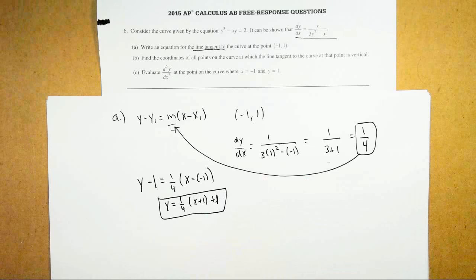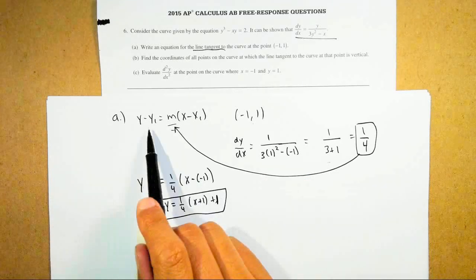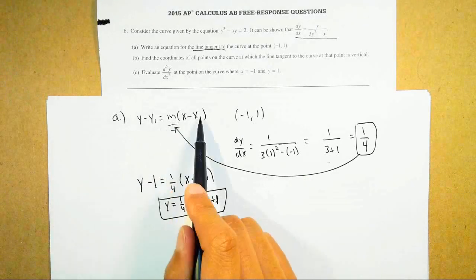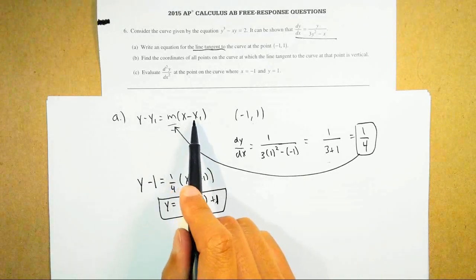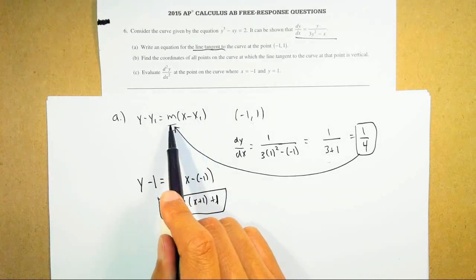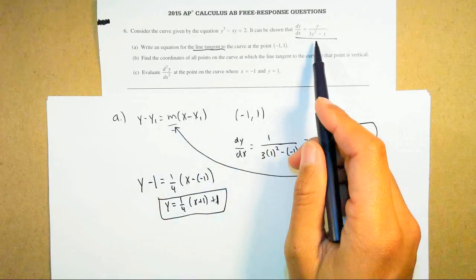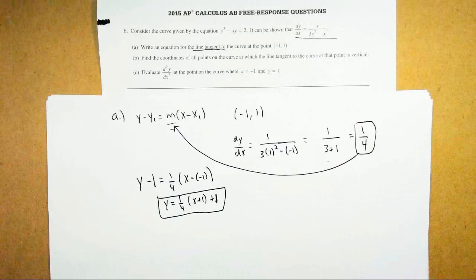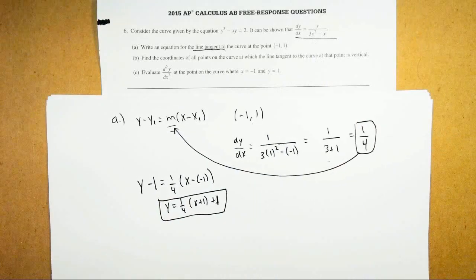So for any tangent line problem, think of this anytime you hear it: write out y minus y1 equals m times (x minus x1). Figure out x1 and y1 — they'll probably be given to you — then find your derivative for m. If the derivative is given to you, just plug it in and that's it. By the way, part A was worth two points.